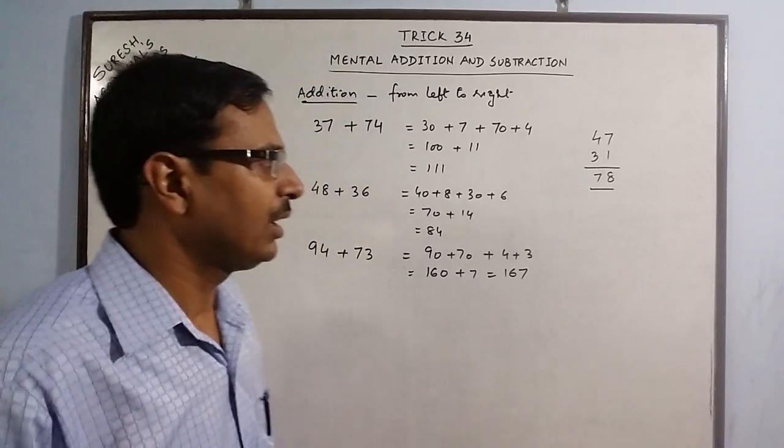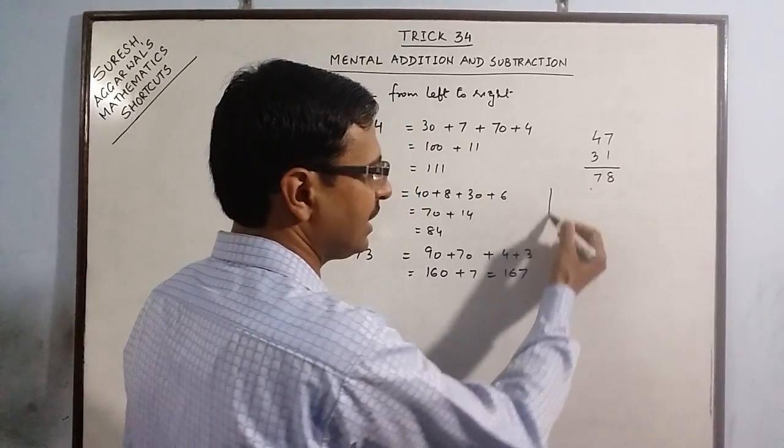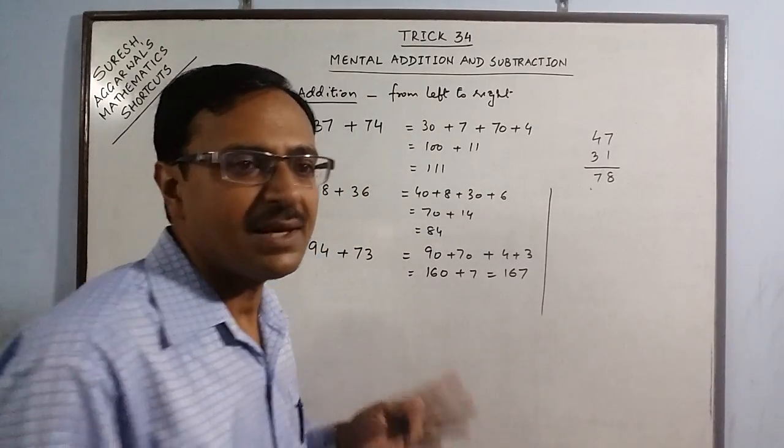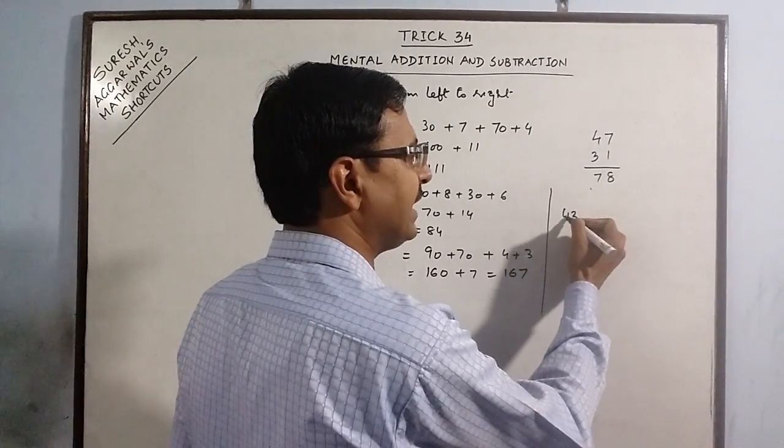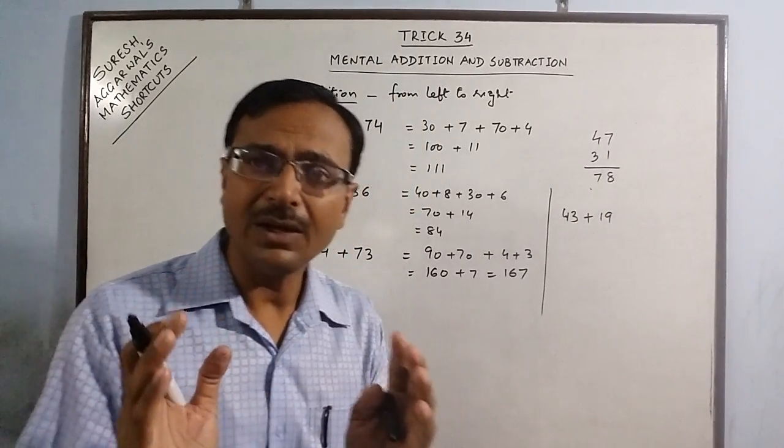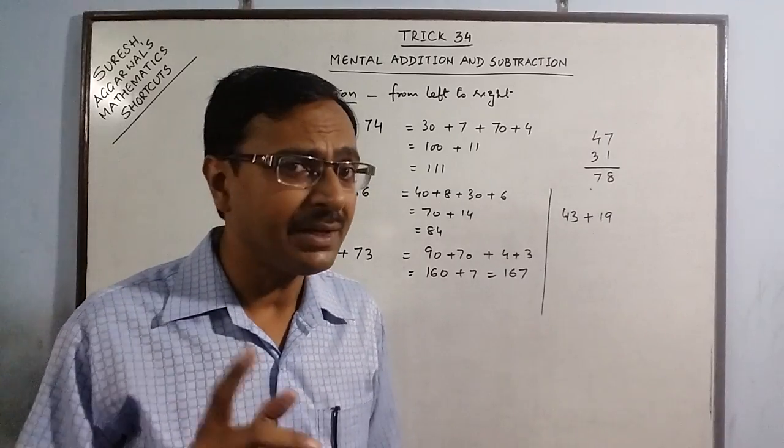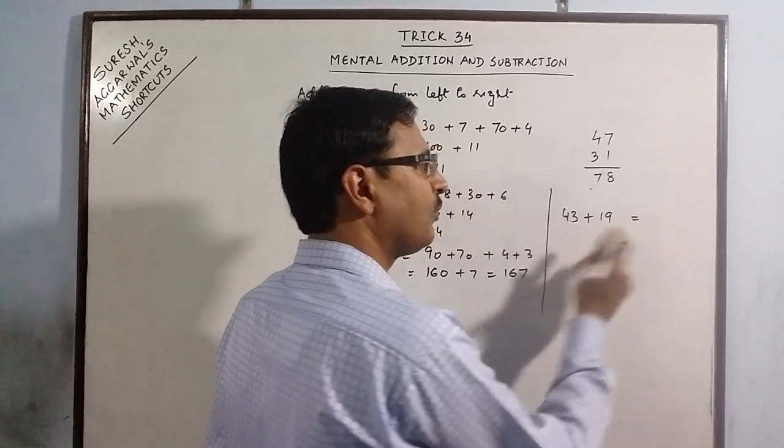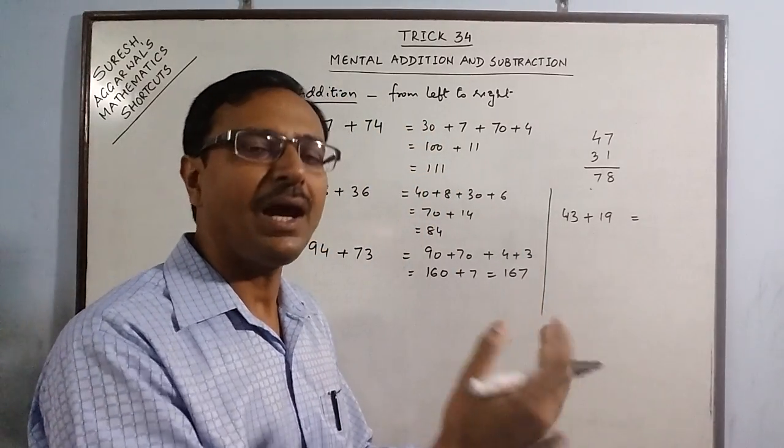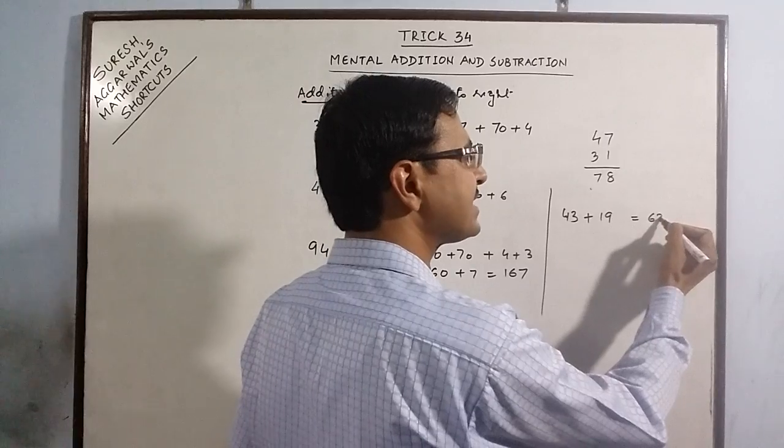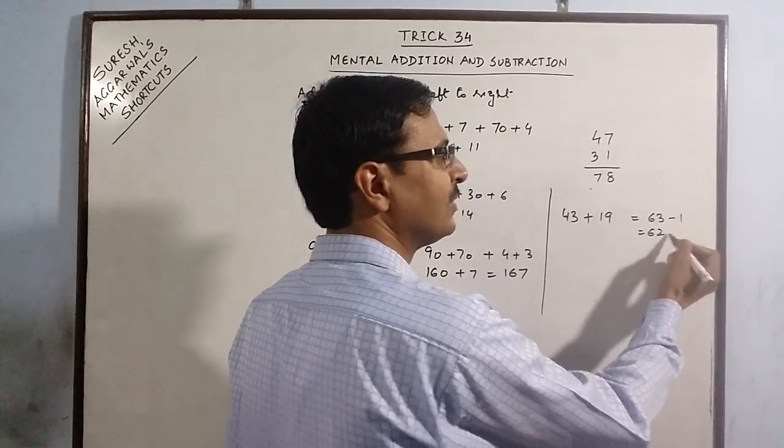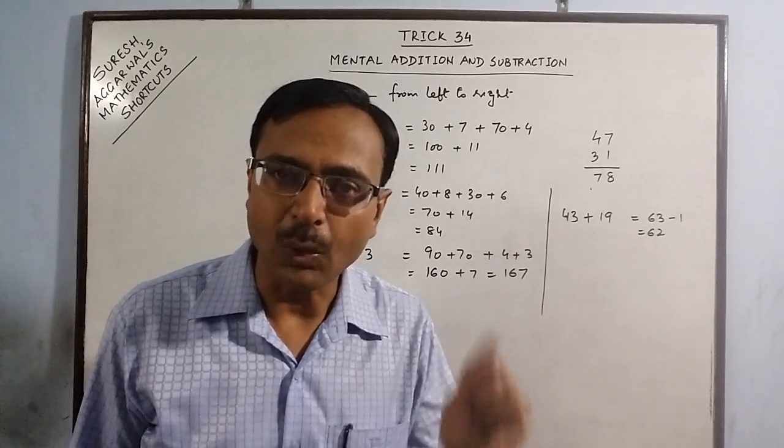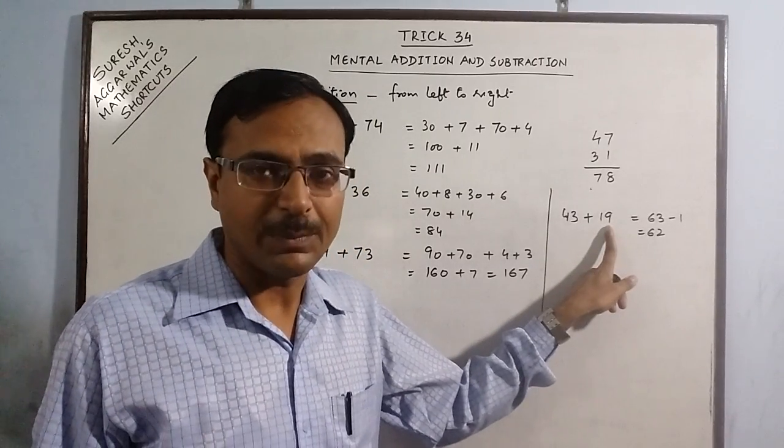Another small step for mental addition is when you are adding numbers, don't add the numbers as it is. Say suppose we have 43 plus 19. Adding 19 altogether is difficult, but adding 20 is easier. So what you do is 43 plus 20 and then reduce by 1. So this is actually 63 minus 1 = 62. So your answer is 62. You have not actually added the numbers; you have added a round figure which was very near to this number 19.